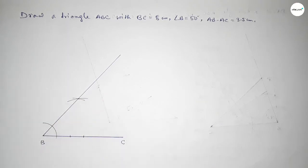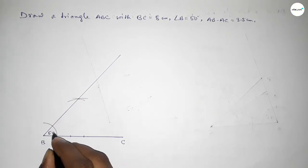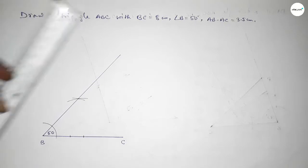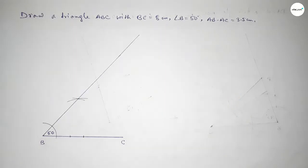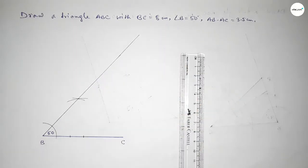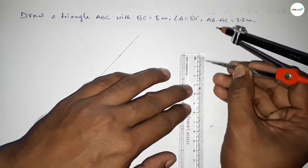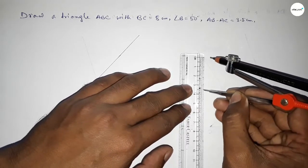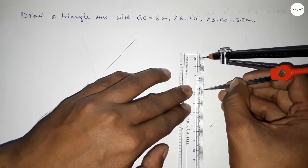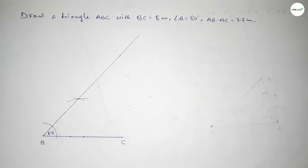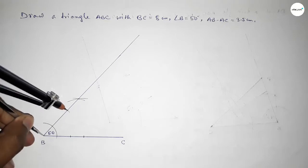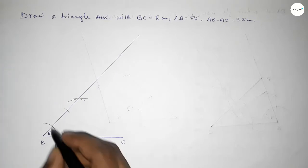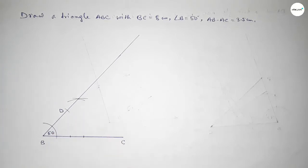Checking — this is perfectly 50 degrees. Now we extend this line. Taking length 3.5 centimeters with the compass, placing it at point B and cutting to mark point D, so BD equals 3.5 centimeters.